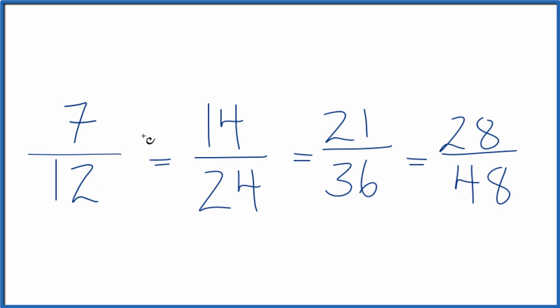If you divide 7 by 12, 14 by 24, 21 by 36, or 28 by 48, you get the same decimal answer. They're all equivalent fractions.